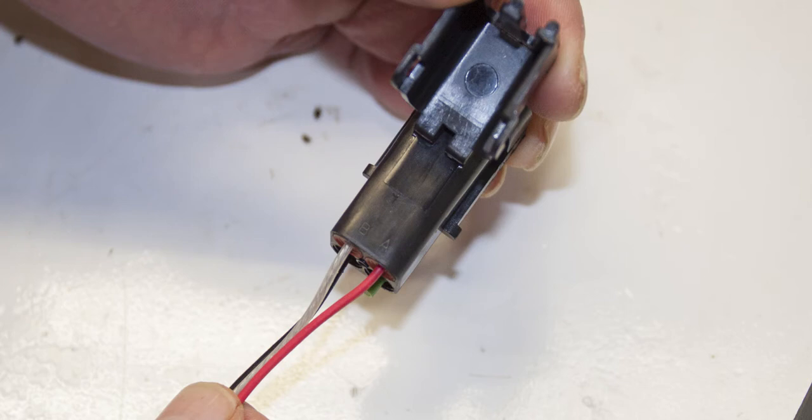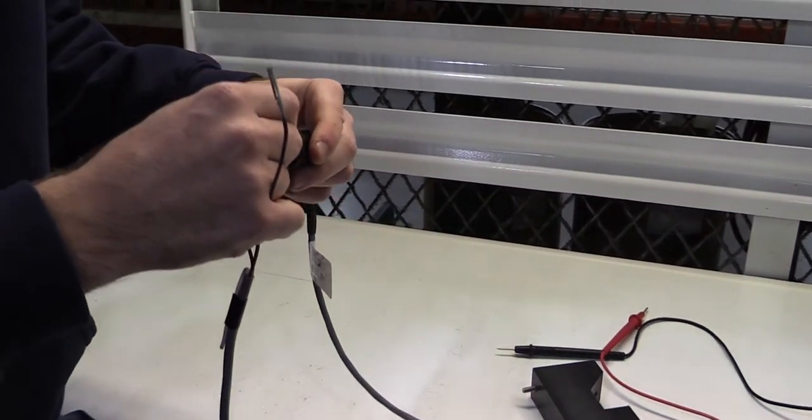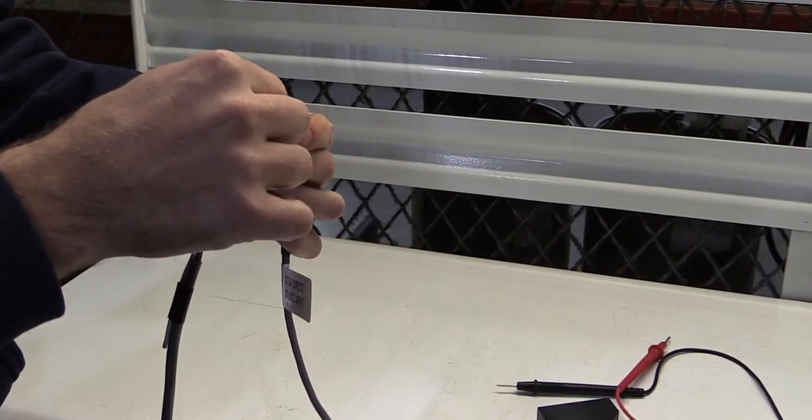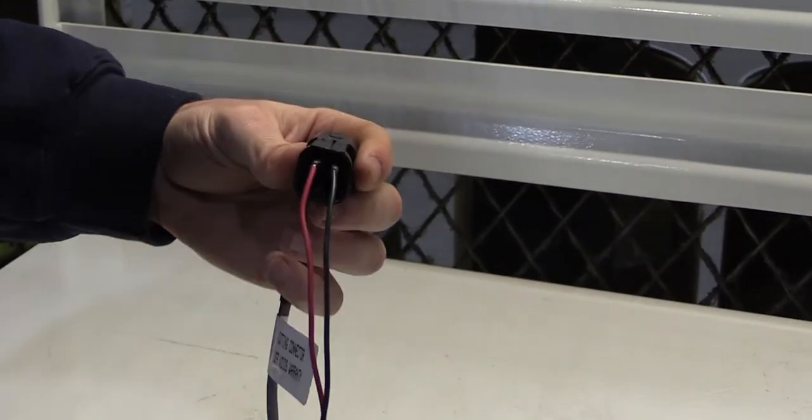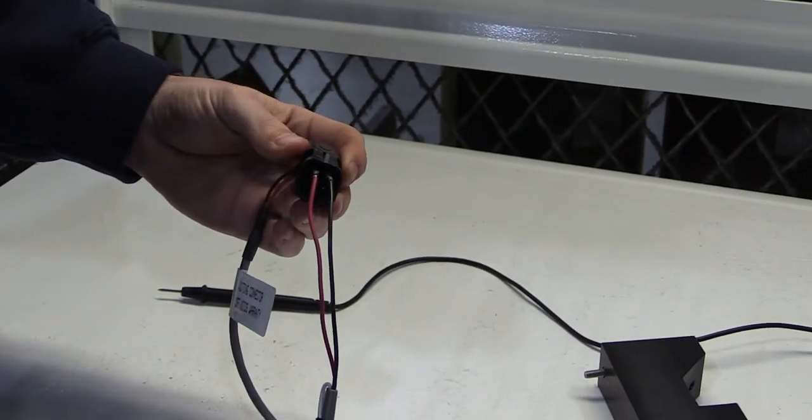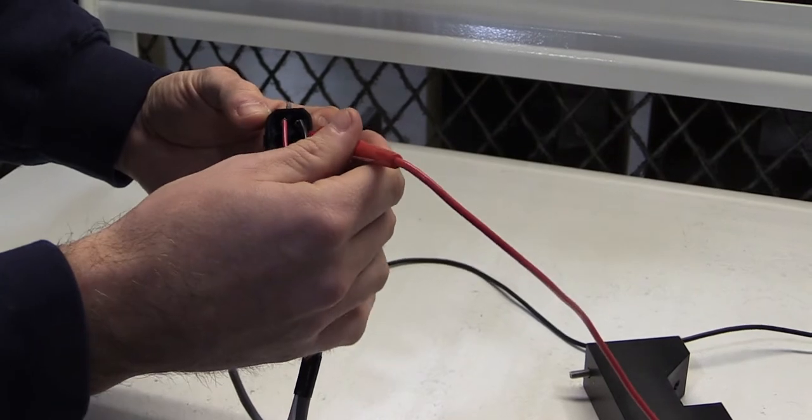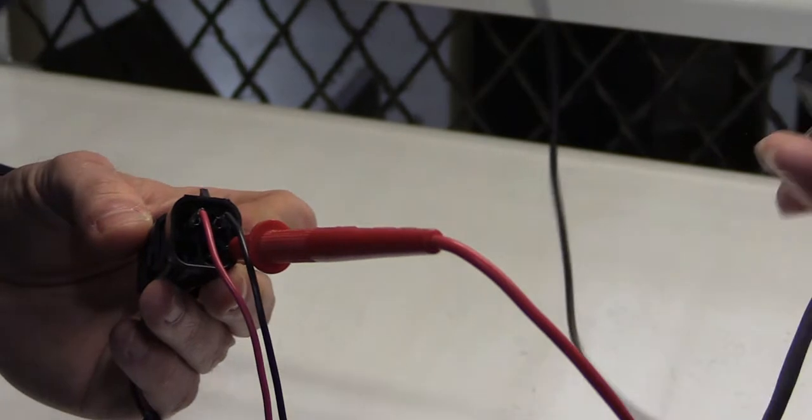First, connect the 12-volt power supply positive to pin A and negative to pin B. Next, connect the tester's positive lead to pin C. And then, connect the tester's negative lead to pin B.